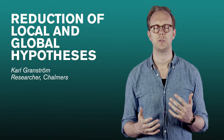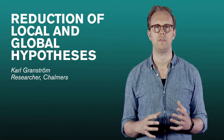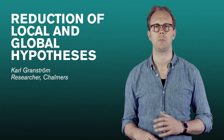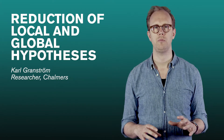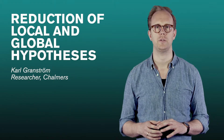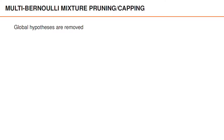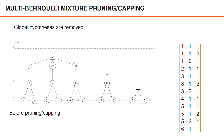In this video we will see how the reduction of the MBM affects the local and global hypotheses. This works in the same way in both the MBM filter and in the PMBM filter. First we do pruning and capping of the multi-Bernoulli mixture, which means that global hypotheses or multi-Bernoullis are removed. Let's illustrate this with an MBM filter example, and the basics of this applies also to the MBM part of the PMBM filter.